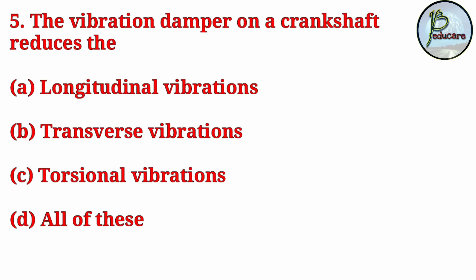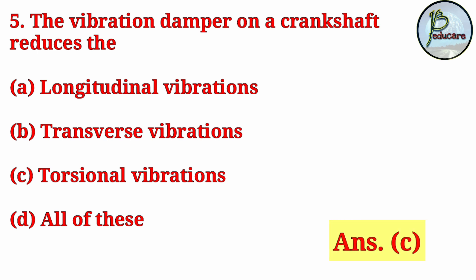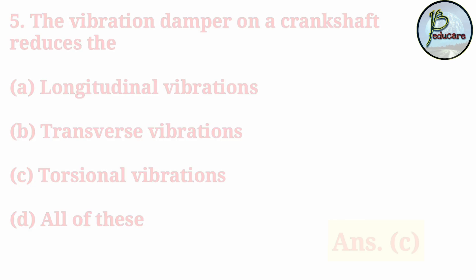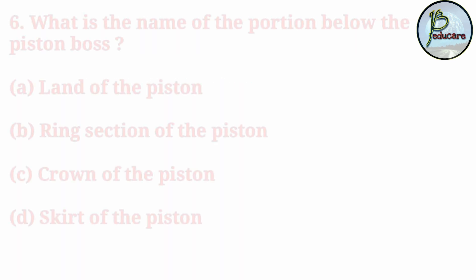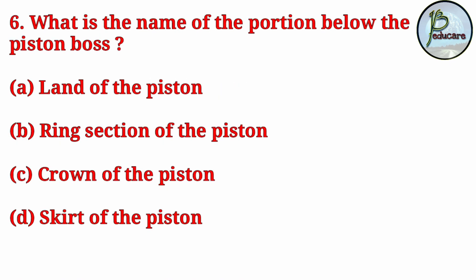The vibration damper on a crankshaft reduces the? The correct answer is C — torsional vibrations. Next question: what is the name of the portion below the piston boss?